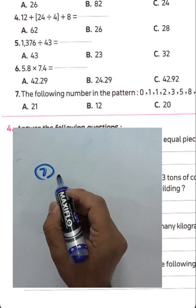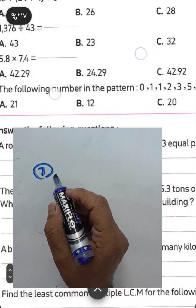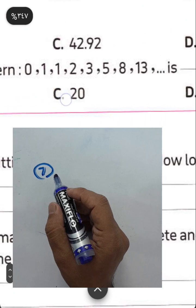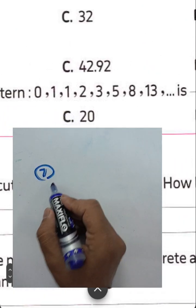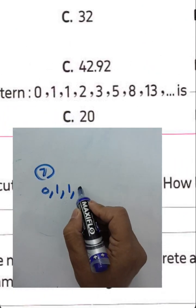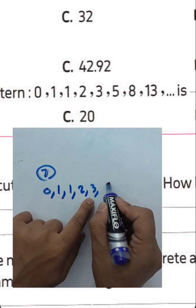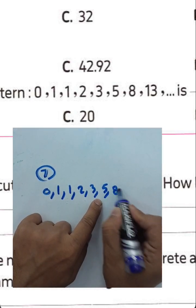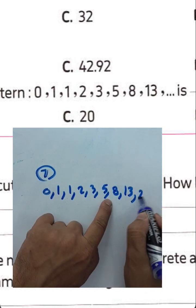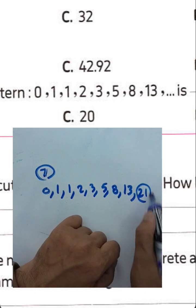The following number in the pattern: 0, 1, 1, 2, 3, 5, 8, 13. The rule is to add the two previous numbers: 0+1=1, 1+1=2, 1+2=3, 2+3=5, 3+5=8, 5+8=13, 8+13=21. The next number will be 21.